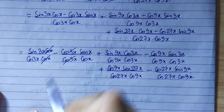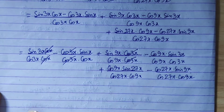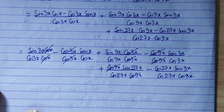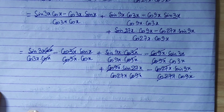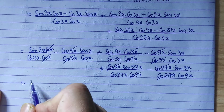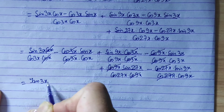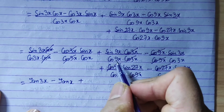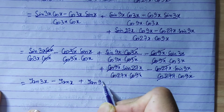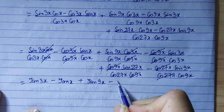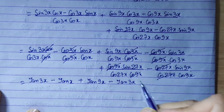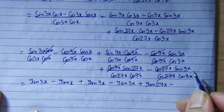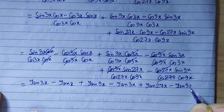After cancellation, cos3x cancels with cos3x, cos9x cancels with cos9x, and cos27x cancels with cos27x. We then write: sin3x upon cos3x is tan3x, sinx upon cosx is tanx, sin9x upon cos9x is tan9x, sin3x upon cos3x is tan3x, and sin27x upon cos27x is tan27x, sin9x upon cos9x is tan9x.